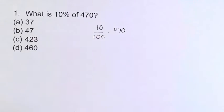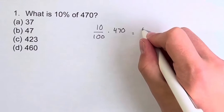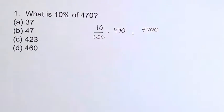So 10 times 470. When you're multiplying by 10 you just add a zero on at the end. So 470 with a zero at the end is 4,700.